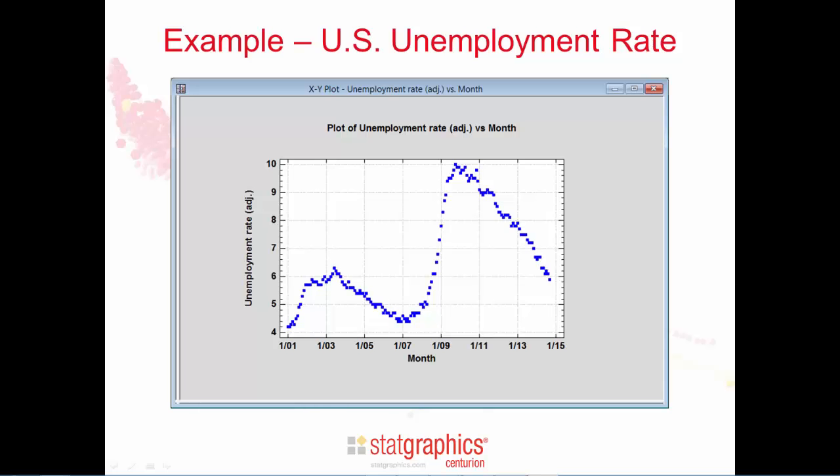This is a plot of the seasonally adjusted unemployment rate in the United States monthly between January 2001 and September 2014. We'd like to forecast this for the next several months. We'd also like error bounds on our forecasts.